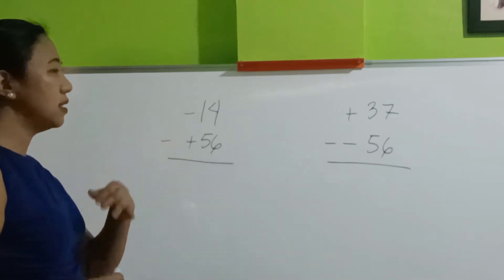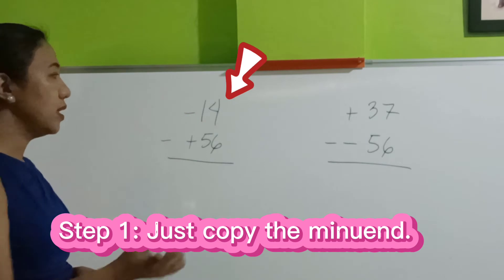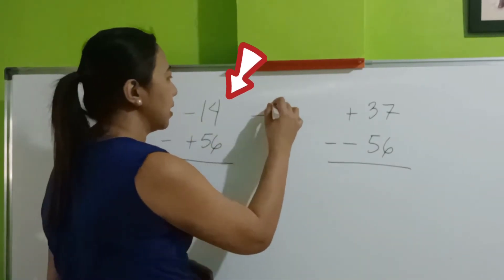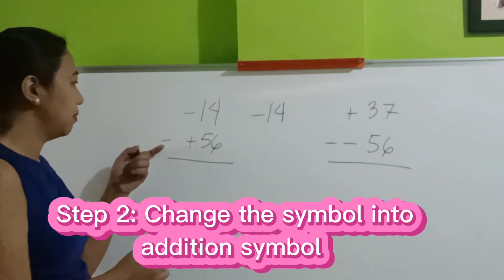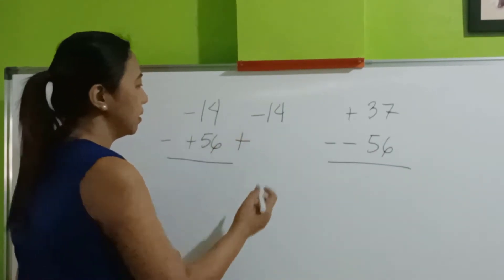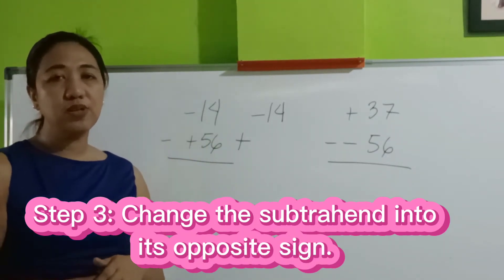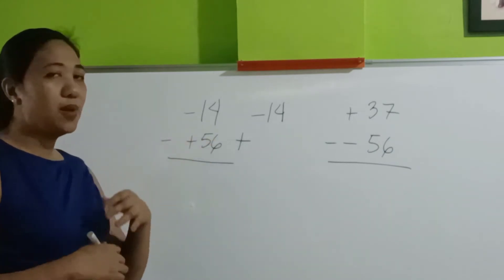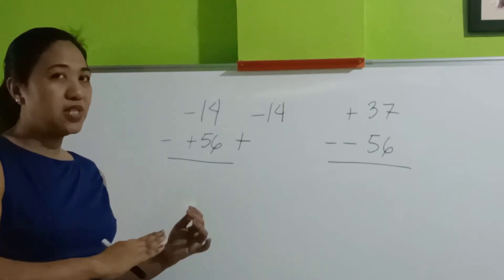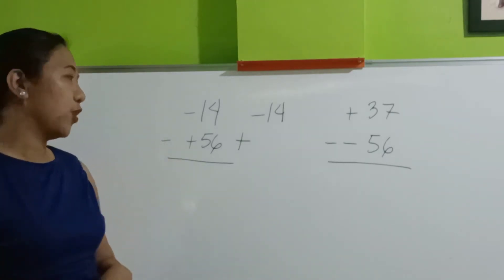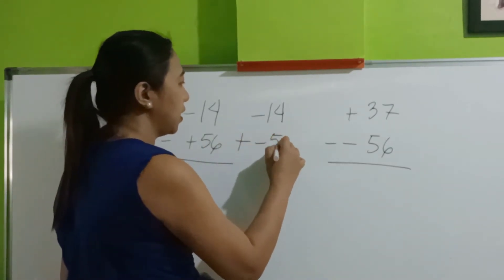Negative 14 minus positive 56. Step 1, copy the minuend. So negative 14 is the minuend. Step 2, subtraction becomes addition — minus becomes plus. Step 3, turn the subtrahend into its opposite sign. Meaning, if it's a positive number, turn it into its negative form, or if it's a negative number, change it into its positive form. So because this is a positive number, it becomes negative 56.